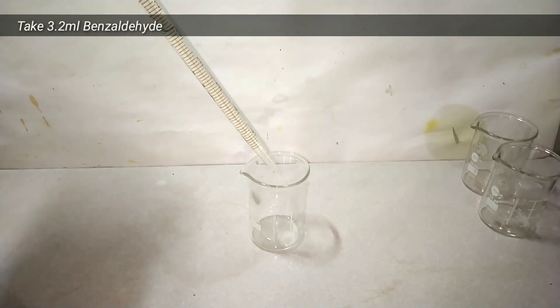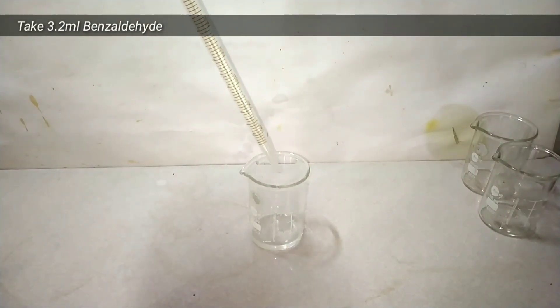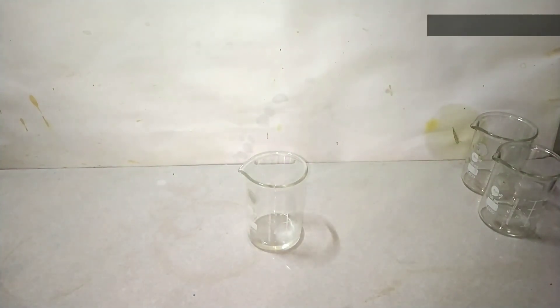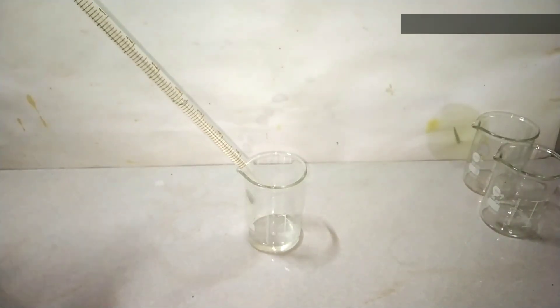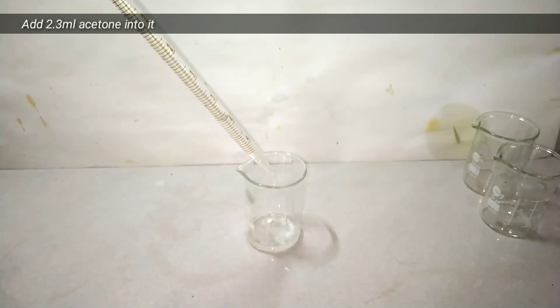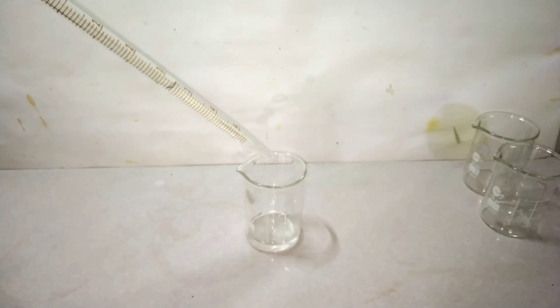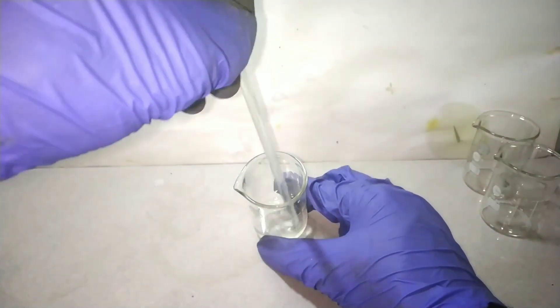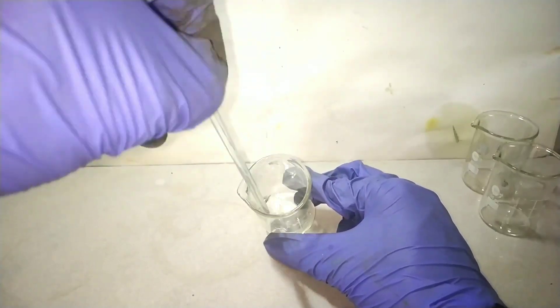Now we take another 50 milliliter beaker and pipette out 3.2 milliliters benzaldehyde into it. Next we pipette out 2.3 milliliters of acetone and add it into the same beaker. Now with the help of a glass rod mix them well.